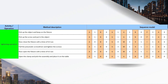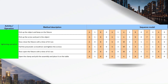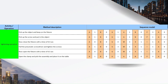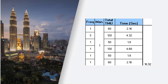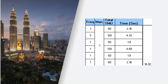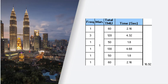Now we calculate frequency, TMUs, and seconds. The first operation is repeated only one time, so frequency is 1. The second step is done three times, so frequency is 3. The third step is done only once, frequency is 1. Pulling the pneumatic driver and tightening the screws has frequency 1. The fourth and fifth steps also have frequency 1.